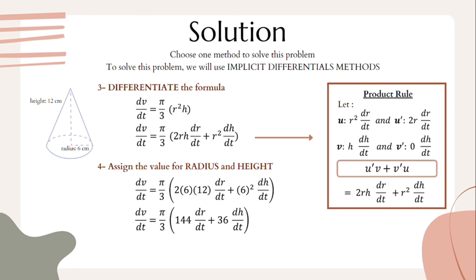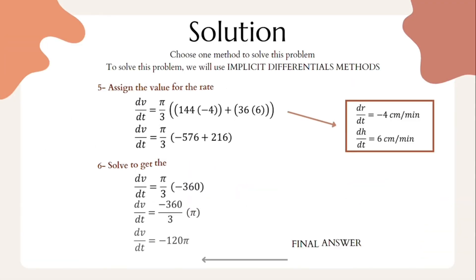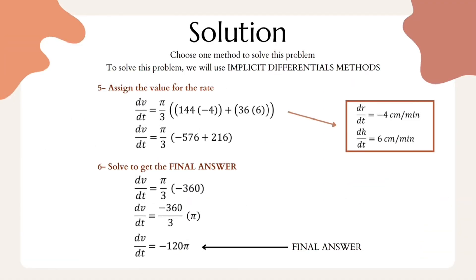After identifying the formula for the cone, we need to differentiate it using the product rule as shown in the slide. After differentiation is completed, we assign the values of radius and height into the formula, and then assign the rates dr/dt = −4 and dh/dt = 6.